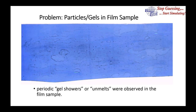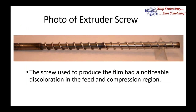This was a periodic problem that occurred after a few hours of operation — it would reappear and then everything would settle down again. Whenever we see a periodic problem in extrusion, we tend to look toward the extruder, so we had them pull out the extruder screw and inspect it.